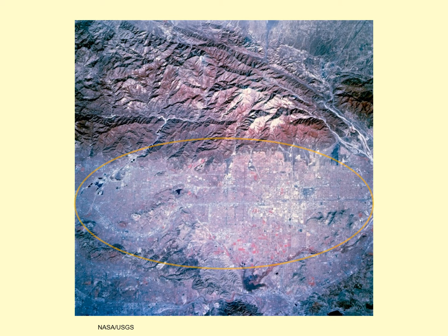So, have you figured out where this eroding system is? In fact, it's the San Gabriel Mountains and the valleys below them. Yes, we really are living on a flood plain.